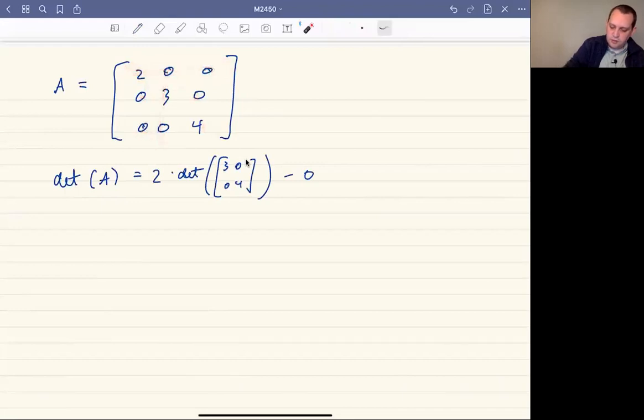So 0, 0, 0, 4 plus 0 times the determinant of 0, 3, 0, 0. So we get minus 0 plus 0. I don't care what the cofactors are because we're multiplying them by 0. This is going to be 2 times—the determinant of [3, 0; 0, 4] is 3 times 4.